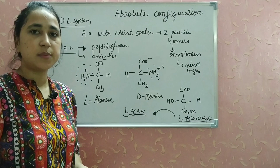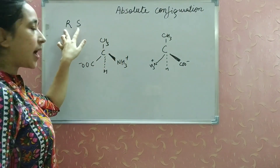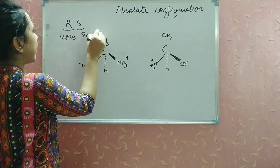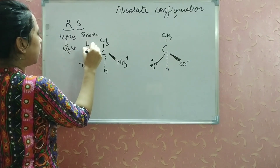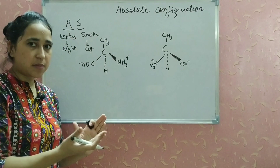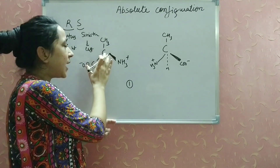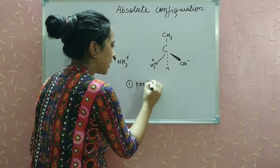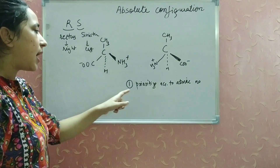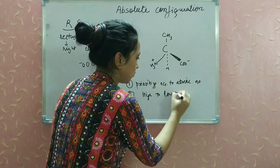Now we move to the RS system — another method to describe the absolute configuration of amino acids. R stands for rectus, meaning right; S stands for sinister, meaning left. To determine whether an amino acid is R or S, we look at the tetrahedral representation of the amino acid. The first step is to give priority to the atoms attached to the central carbon according to their atomic number — prioritize according to atomic number from high to low.